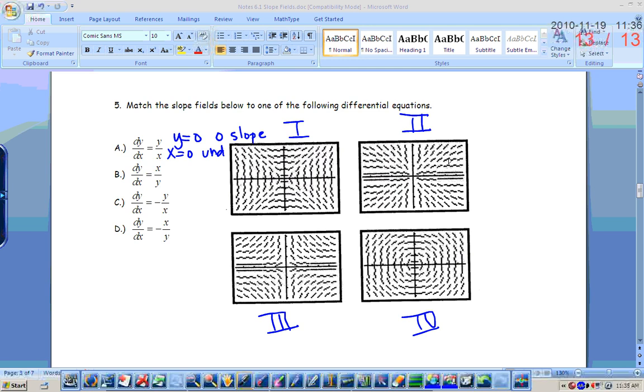Okay, in the first quadrant, so A is either going to be two or three. In the first quadrant on A, should your slopes be positive or negative? Positive. So, which one is A? It has to be two. And because C is negative y over x, then in the first quadrant your slopes are going to be negative, so that's three.